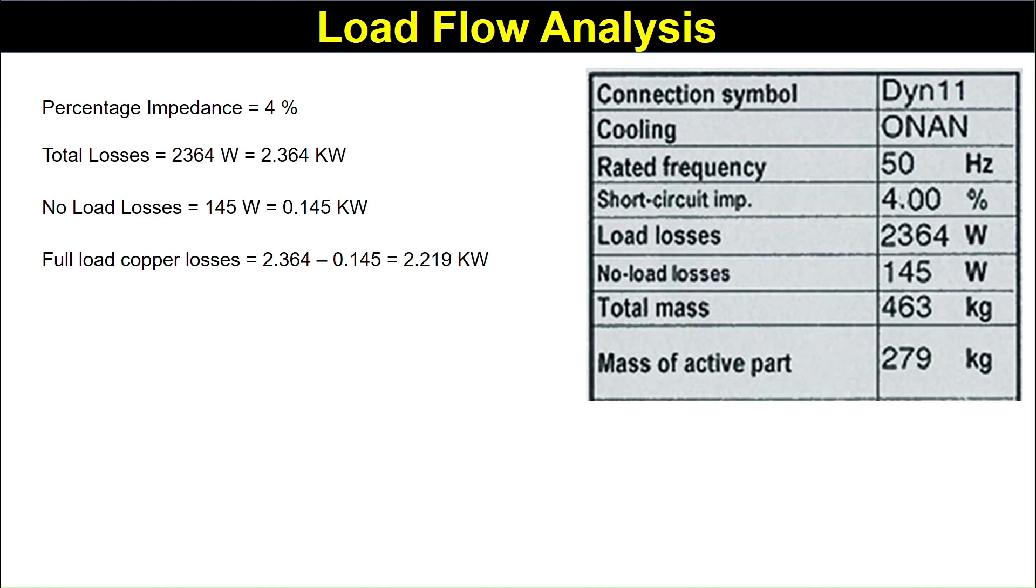Full load copper loss is equal to 2.364, that is the total loss, minus no load loss, that is 0.145. It becomes 2.219 kilowatts. Rating of transformer is 100 kVA and we will take the rating of transformer as base kVA.